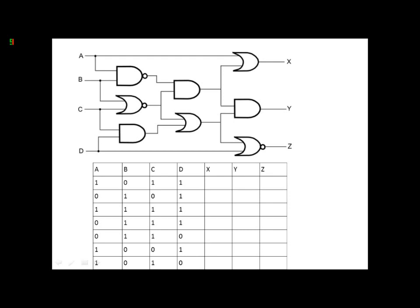So if A is 1, then X must automatically be 1 because it is an OR gate. So X is 1.